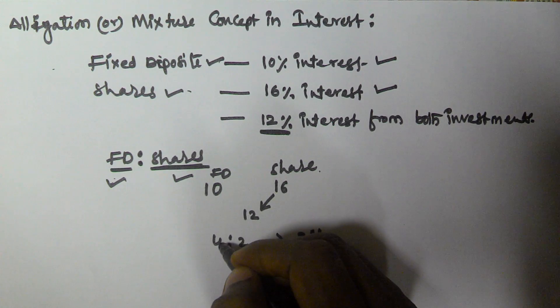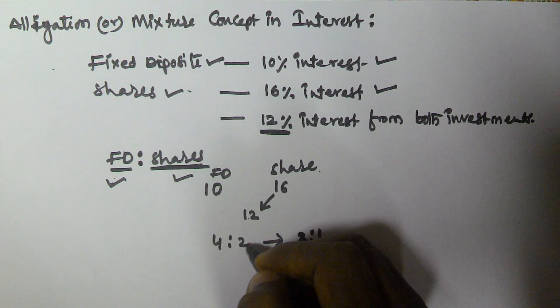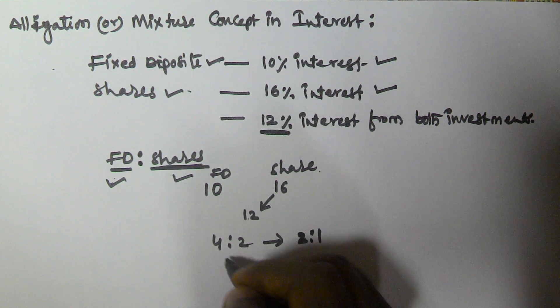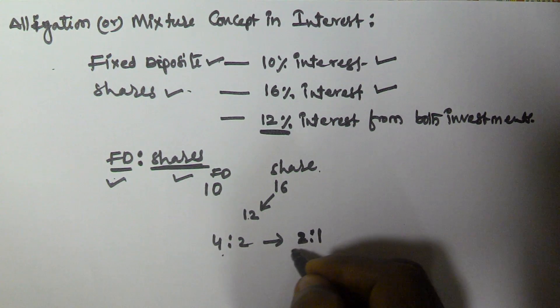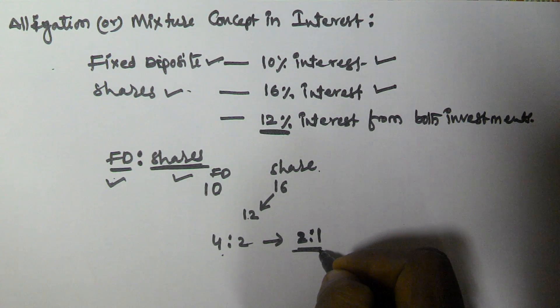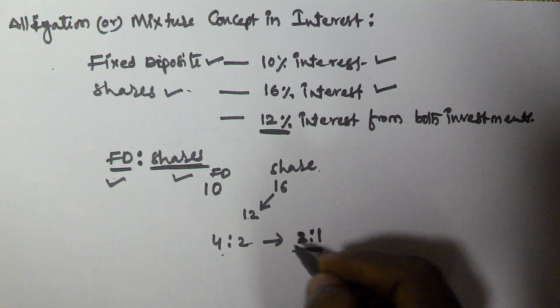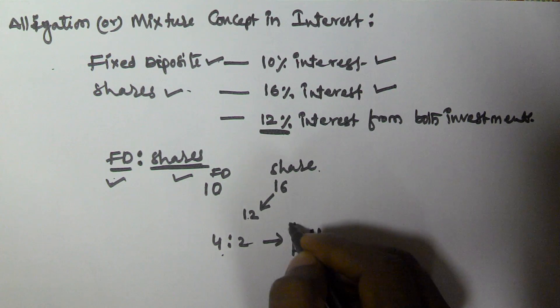16 minus 12 equals 4. 12 minus 10 equals 2. So 4 to 2 is equal to 2 to 1. He invested the amount in FD and shares in the ratio of 2 to 1.